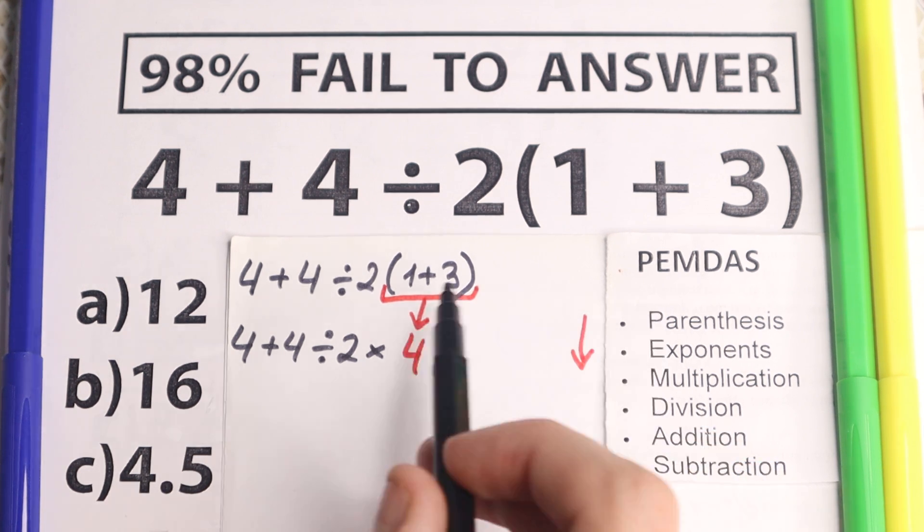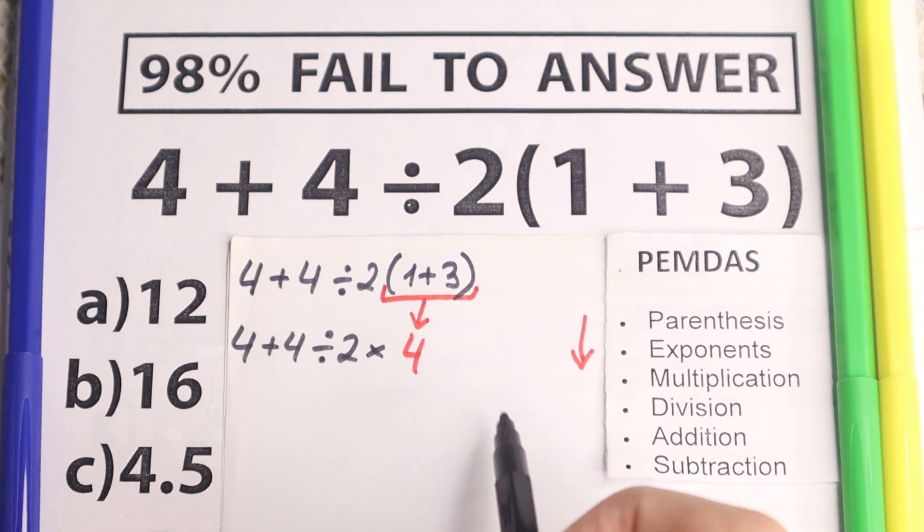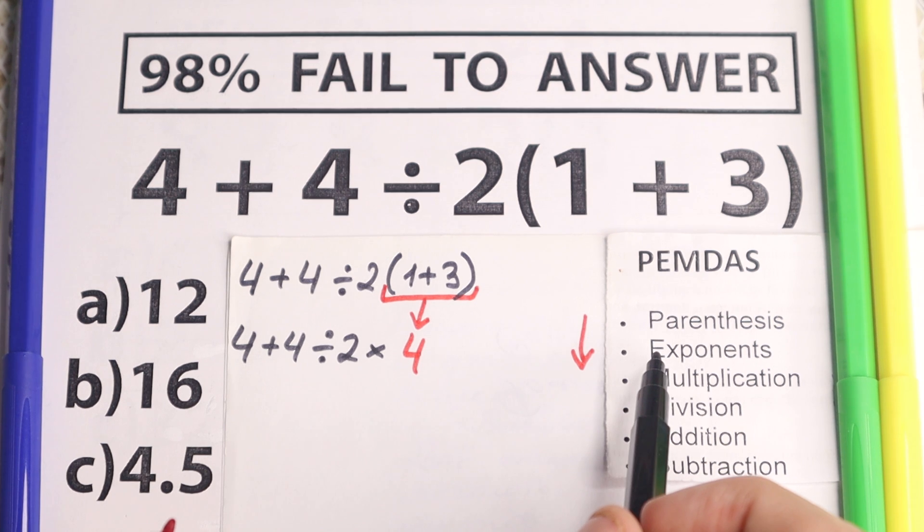I hope you understand this, parentheses, first step, start, we add it, 1 plus 3 equal to 4. OK, let's go to the next step.